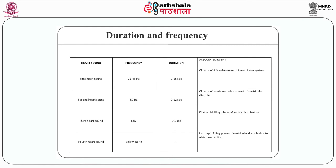In the table, the heart sounds, their frequency, duration, and associated events have been described. The first heart sound has a frequency of 25 to 45 Hz and a duration of 0.15 seconds; associated with closure of the atrioventricular valve and onset of ventricular systole. The second heart sound is at 50 Hz with a duration of 0.12 seconds, associated with the closure of the semilunar valve and onset of ventricular systole. The third heart sound is of very low frequency with a duration of 0.1 seconds, associated with the first rapid filling phase of ventricular diastole. The fourth heart sound is below 20 Hz and is mainly associated with the last rapid filling phase of ventricular diastole due to atrial contraction.